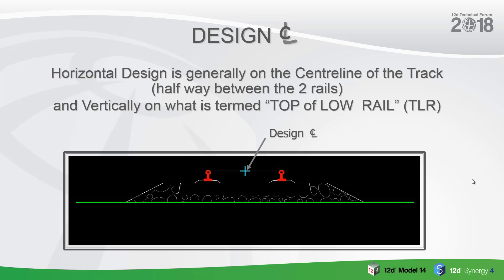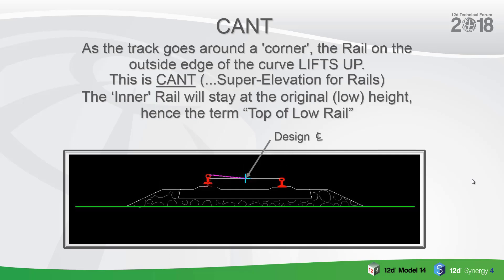On to the design centreline. Horizontal design is generally on the centreline of the track, which is halfway between the two rails. And vertically, it's on what's normally termed top of lower rail, or TLR. We then introduce cant. As the track goes around a corner, the rail on the outer edge of the curve lifts up — which is what the cant is — basically superelevation for rails. The inner rail will always stay at the original or low height, hence the term top of lower rail. So whenever you take a corner either to the left or the right, one rail will stay at the low level, and that is the top of lower rail, which is the design criteria.